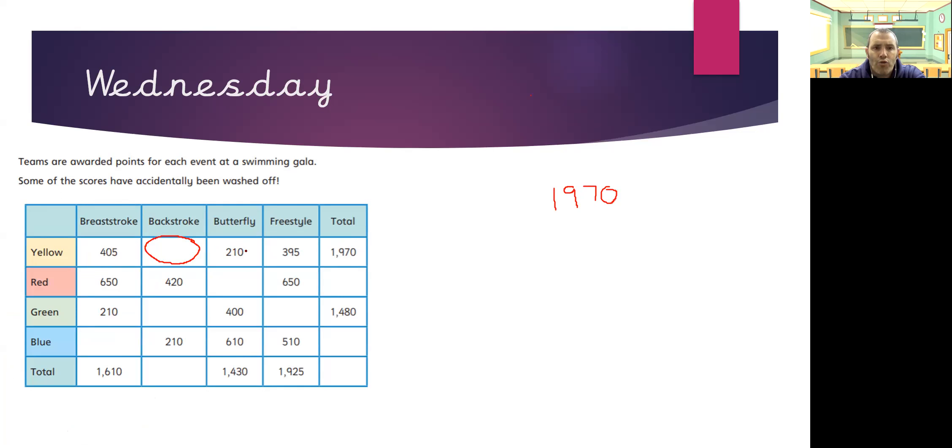I know three of the scores. So I can add those three scores together. 405 plus 210 plus 395. I'm going to put the plus sign there to remind me I'm adding. I'm going to leave a space as well. So if I've got any regrouping, I can add the numbers at the bottom.